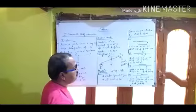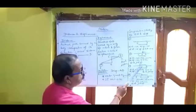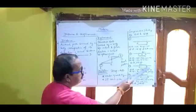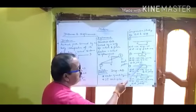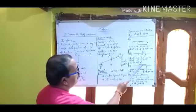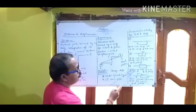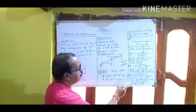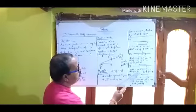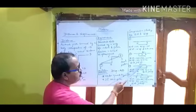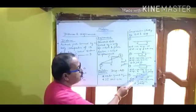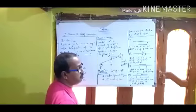Now see the third case. The body starts from O, goes to A, returns from A, and comes back to O. Its initial and final position is the same. The distance is OA plus AO, which is positive, but displacement is zero because the initial and final positions are the same. In this case also, distance is greater than displacement.